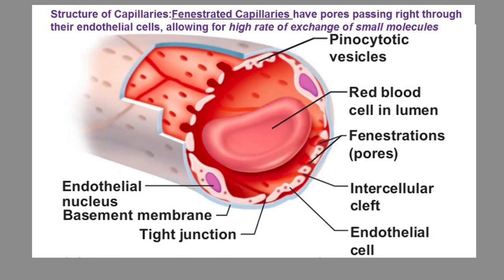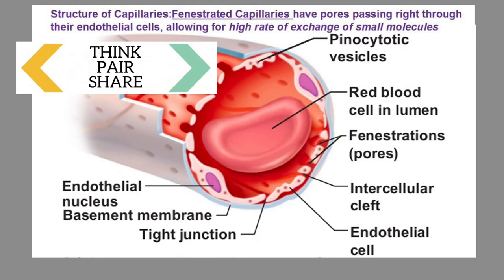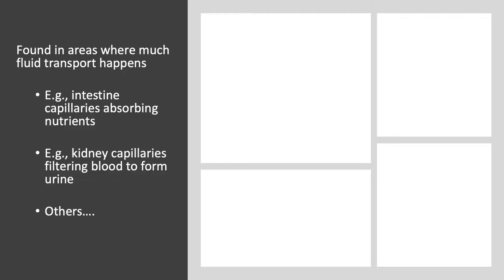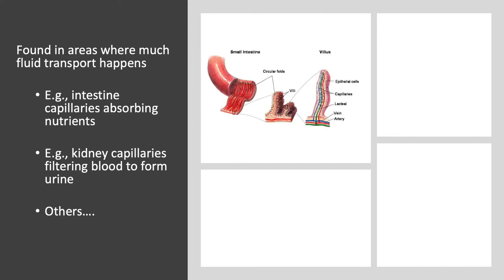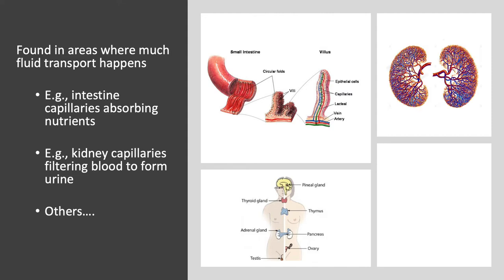Fenestrated capillaries are found in special locations where large amounts of fluid transport, filtration, release, or absorption occur between the blood and the interstitial tissue. Examples include the small intestine for nutrient absorption, endocrine glands to facilitate absorption of hormones, the kidneys involved in filtering the blood, and the choroid plexus where cerebrospinal fluid is secreted.